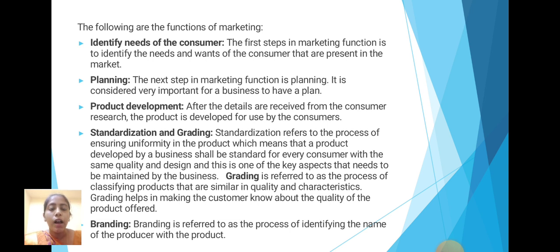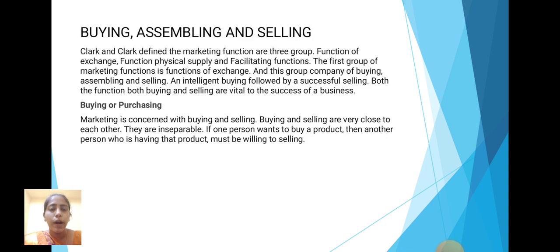Next is branding. Branding is referred to as the process of identifying the name of the producer with the product. Next, buying, assembling and selling. Clark and Clark defined the marketing functions in three groups: functions of exchange, functions of physical supply, and facilitating functions. The first group of marketing functions is the function of exchange, which comprises buying, assembling and selling. An intelligent buying followed by a successful selling — both buying and assembling are vital to the success of a business.